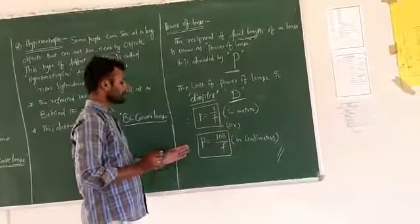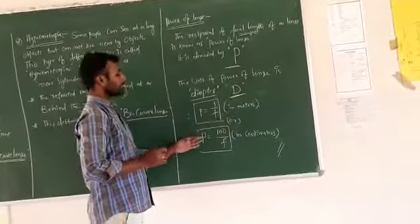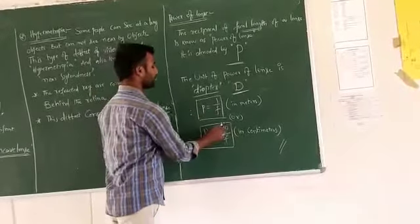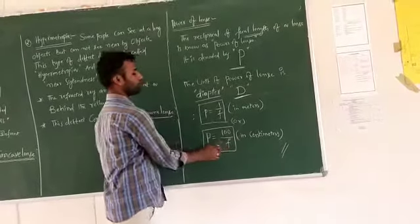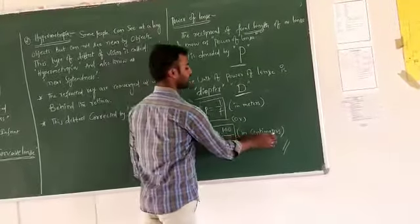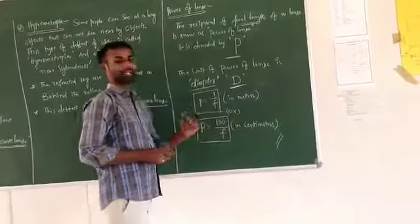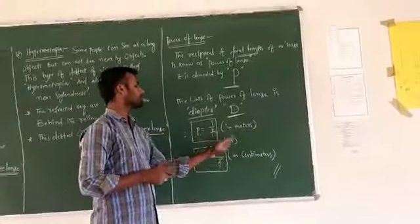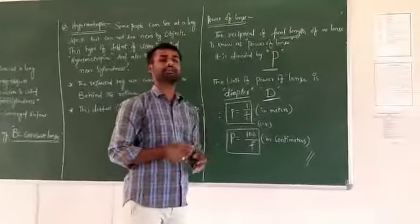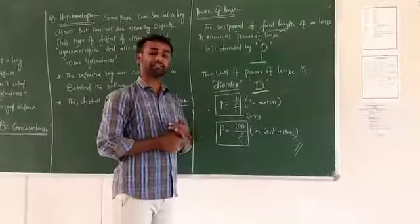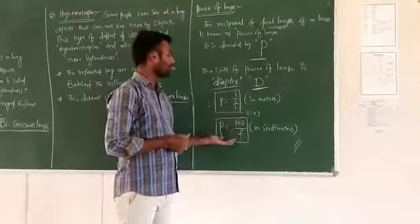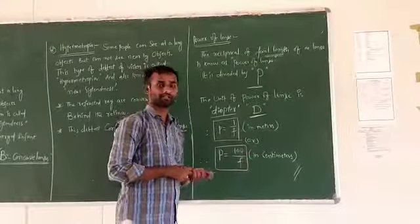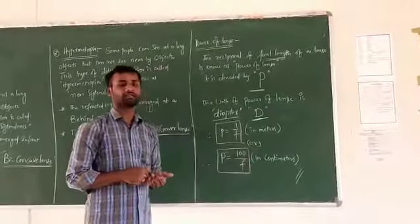When the focal length is in centimeters, then P equals 100 by F, since 1 meter equals 100 centimeters. Sometimes we consider focal length in meters and sometimes in centimeters when calculating power of lens. Thank you.